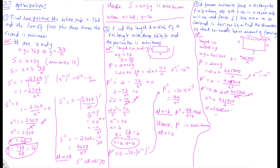With x = 450, we find y = 405,000/450 = 900. We've found x = 450 and y = 900, but we still need to verify this minimizes the perimeter of the three sides.